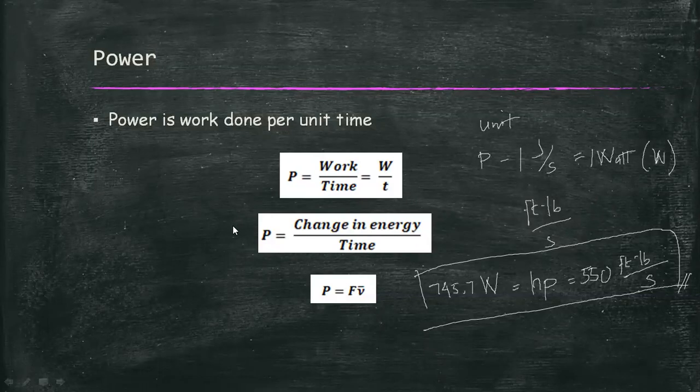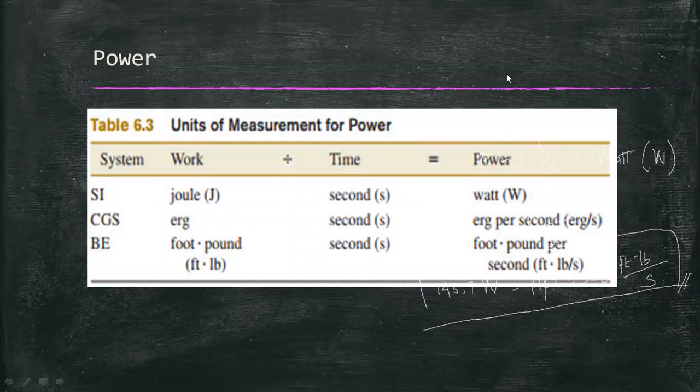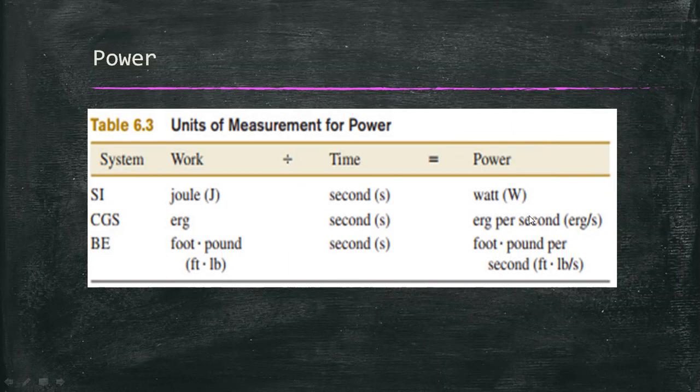Here is a table of measurements of power. In SI, we have watts. For CGS, we have erg per second. And for British English, we have foot-pound per second.